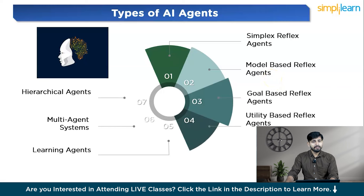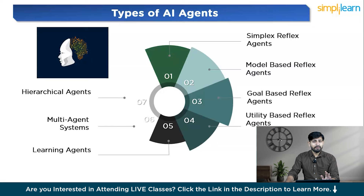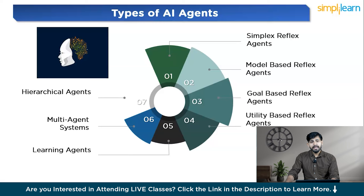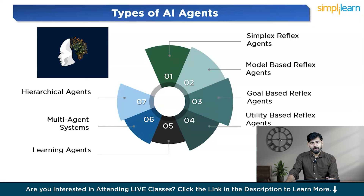Fourth, utility-based agents maximize performance using a utility function — for example, an investment AI selecting portfolios to maximize returns. Fifth, learning agents improve performance over time through experience — for example, a recommendation engine refining suggestions based on user interactions. Sixth, multi-agent systems (MAS) work together towards common or individual goals — for example, a network of AI agents managing a smart city's infrastructure. And seventh, hierarchical agents are organized in a hierarchy with specific roles at each level — for example, a management AI overseeing other agents in a manufacturing plant.